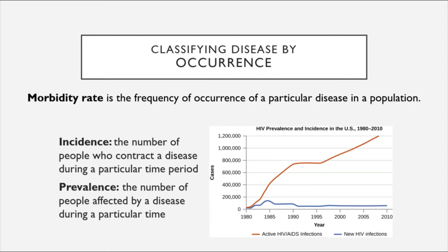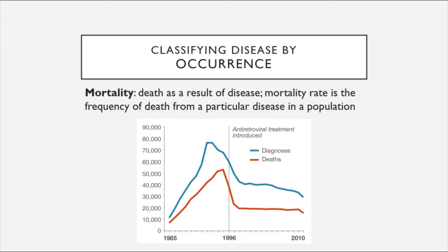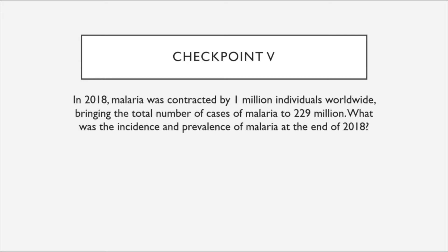Another quantity epidemiologists track is the mortality rate — the frequency of death from a particular disease in a population. Checkpoint: In 2018, malaria was contracted by one million individuals worldwide, bringing the total active ongoing cases to 229 million. What was the incidence and what was the prevalence of malaria at the end of 2018?